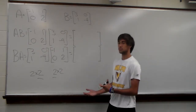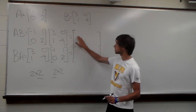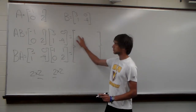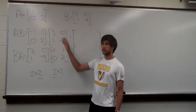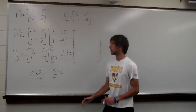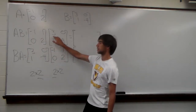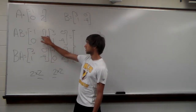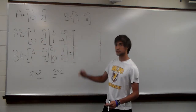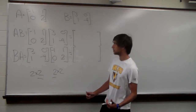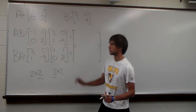Now we'll look at the actual multiplication. To find the entry in our resulting matrix at row 1, column 1, we take row 1 of the first matrix times column 1 of the second matrix. We multiply the first entry of the row by the first entry of the column, then add the second entry of the row times the second entry of the column. Since there are only two entries, we only need those two products.